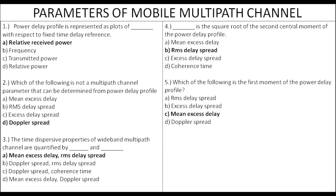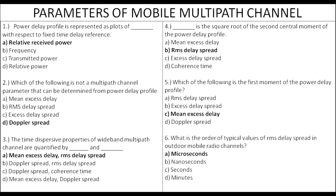The first moment of the power delay profile is the mean excess delay. It may be spatial or temporal. For outdoor radio channels, the path pattern delay is in nanoseconds, and for indoor channels it is also in nanoseconds.